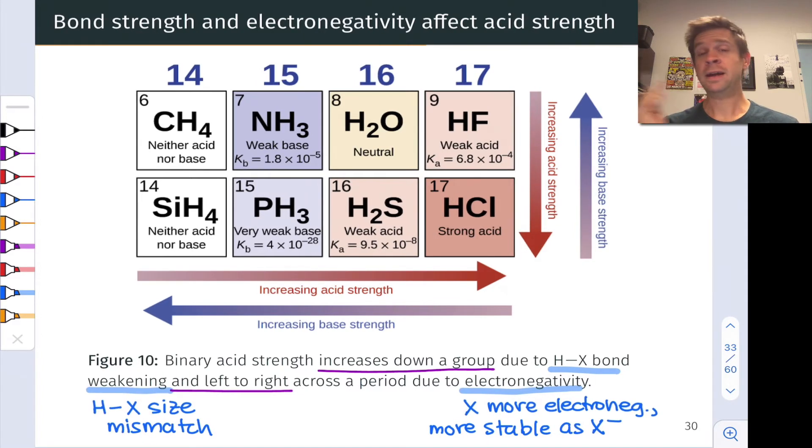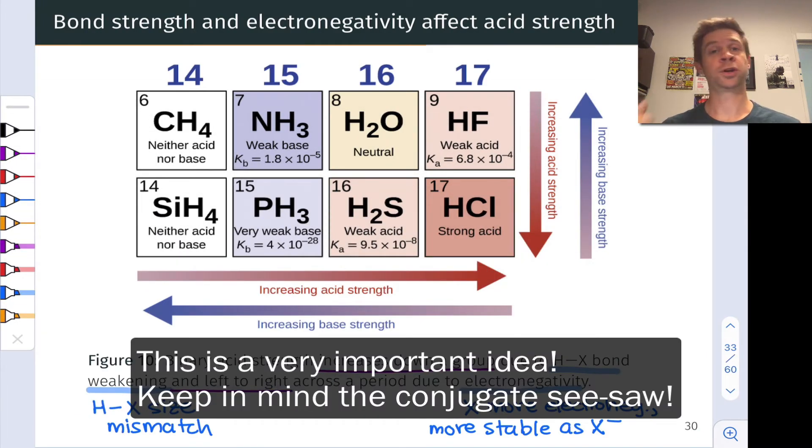And of course, now that we know this, we can extend the logic to the conjugate base strengths. And I'll leave this up to you, but if we think about it sort of in opposite terms, because of the conjugate seesaw, we can make inferences about base strength. For example, H2O is a weaker base than NH3 because O is more electronegative than N and less willing to donate electrons as a base would to pick up a proton.